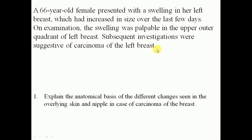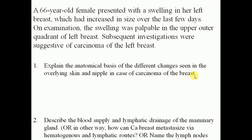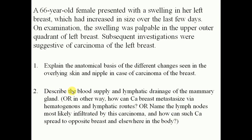The related questions are: first, explain the anatomical basis of the different changes seen in the overlying skin and nipple in case of carcinoma of the breast. Second, describe the blood supply and lymphatic drainage of the mammary gland — or how can carcinoma of the breast metastasize via hematogenous and lymphatic routes, name the lymph nodes most likely infiltrated, and how can such carcinoma spread to the opposite breast and elsewhere in the body.